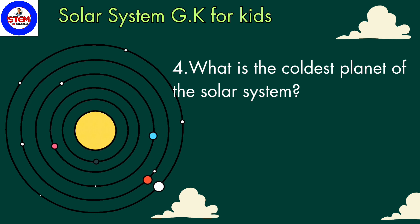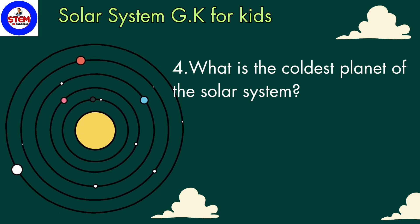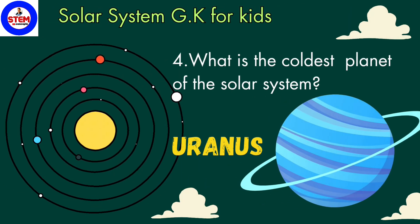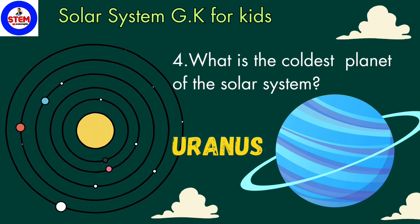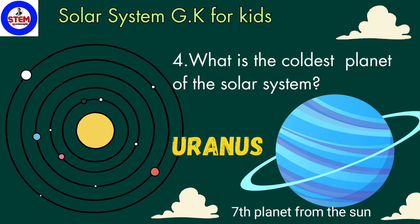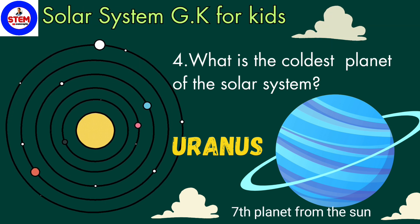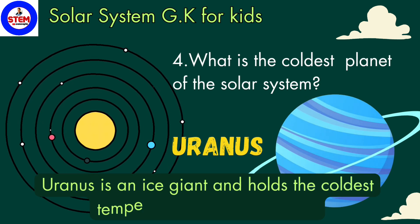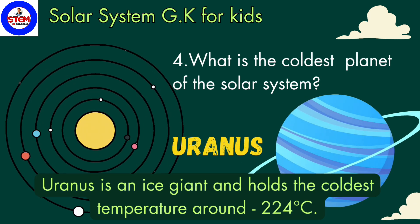Fourth question: what is the coldest planet of the solar system? The answer is Uranus. Uranus is the coldest planet of the solar system. In order, Uranus is the seventh planet from the sun. Do you know, students, Uranus is an ice giant and it holds the coldest temperature, around minus 224 degrees Celsius.